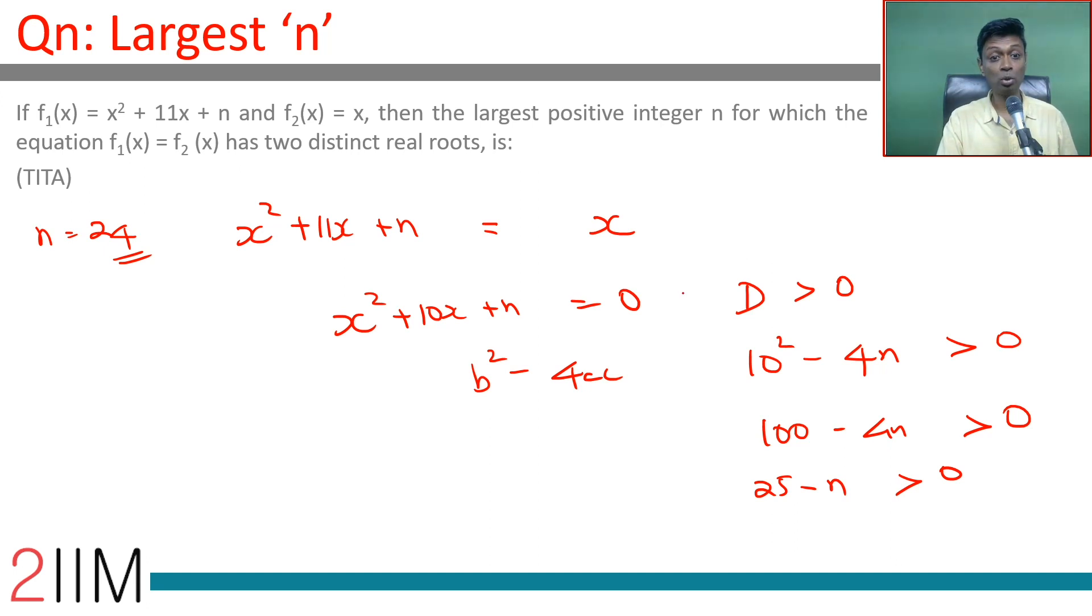If you want two distinct real roots, n has to be less than 25. Largest positive integer less than 25, that is 24. Equate these two, get to the quadratic, and then put discriminant greater than 0.